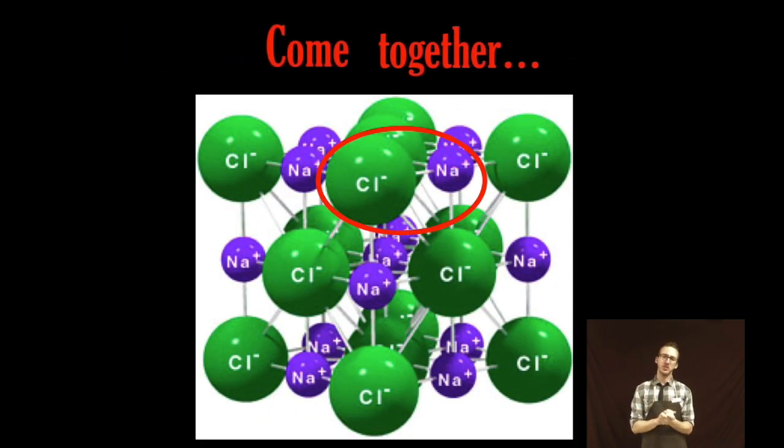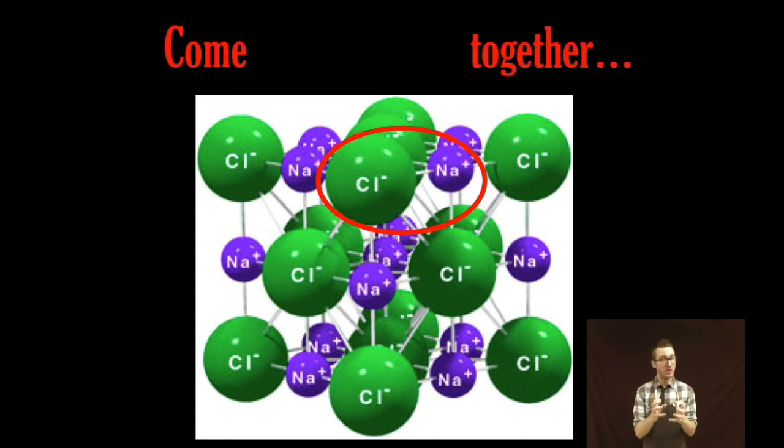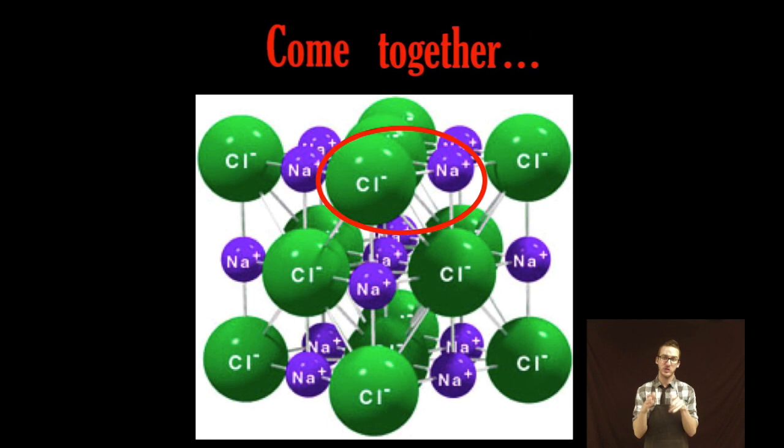Again as you look at this crystal lattice recognize that each of those positive ions are equally attracted to all the negative ions that surround it. And since we don't have discrete molecules on ionic compounds we just identify the smallest ratio of ions to give us an overall neutral charge and say that that is our formula unit.